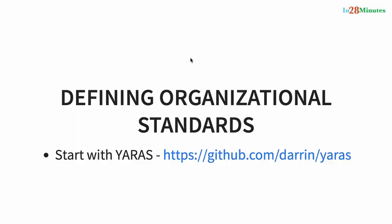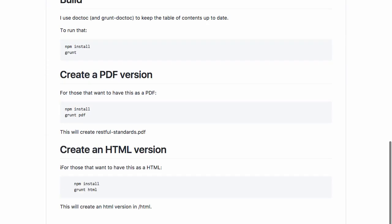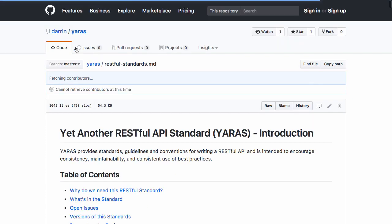In this video let's discuss the importance of defining organizational standards for your RESTful web services. One of the important standards I really like is YARAS. If you go to github.com/darin/yaras — the link is on the screen right now — YARAS stands for Yet Another RESTful API Standard. It defines a standard for RESTful services.